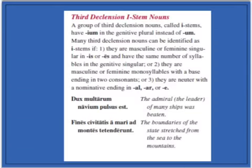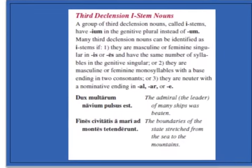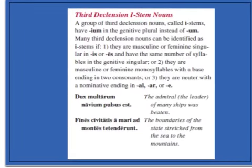Another variation of the Third Declension are called I-stems. The big difference with an I-stem is the genitive plural is IUM instead of UM. But other than that, there's not really a big difference. There are rules to how you form masculine and feminine I-stems, though you just need to be able to recognize what I-stems are.